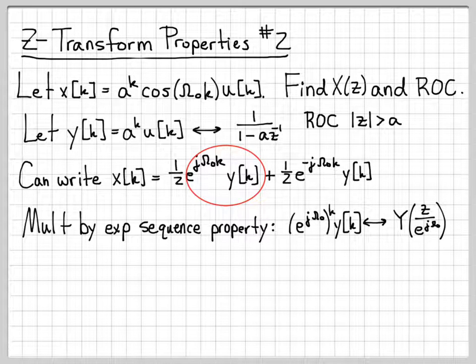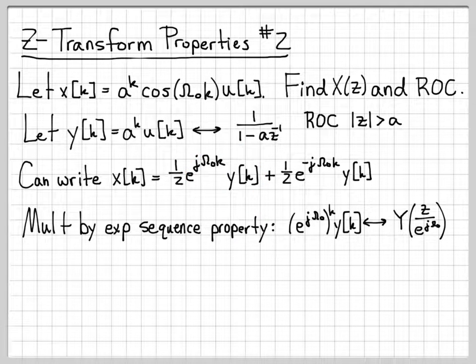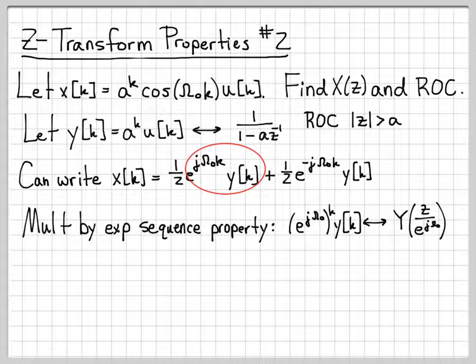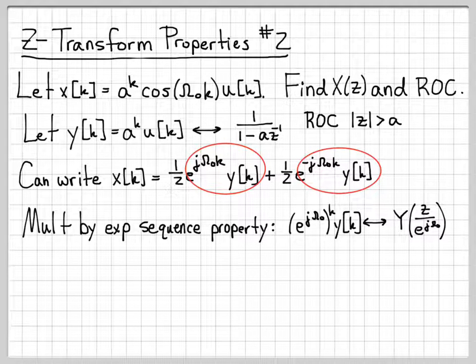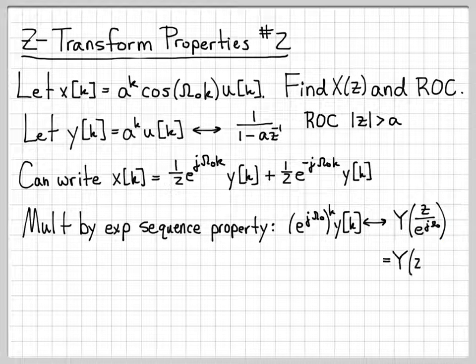That's essentially what I have here. Let's not worry about the scale factor of a half. What I have is a number raised to the k times y[k]. So I can use the exponential sequence property on this piece and on this piece to easily write down the Z-transform of x[k] in terms of Y(z).